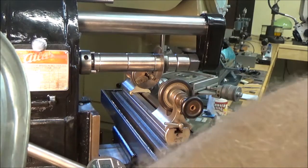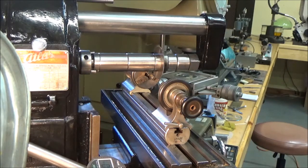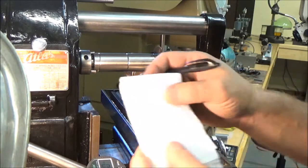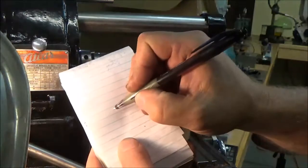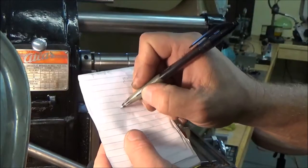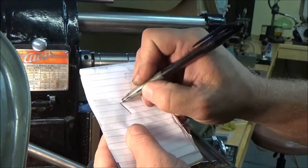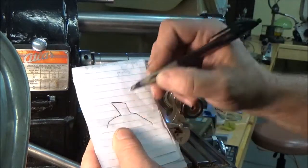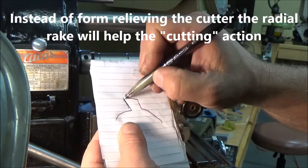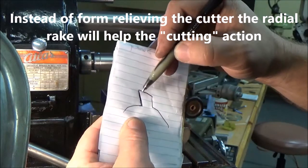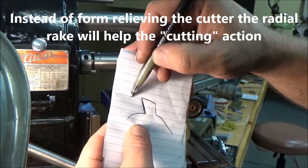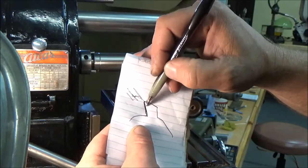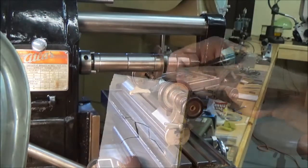If I draw that out real quick, we'll have, let's pretend this is our tooth. We're going to have, this will be the radial rake here. So by offsetting the cutter, that three millimeter right here is going to give us that radial rake. We'll see it when it's done.